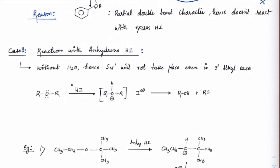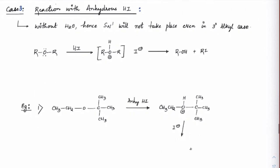With anhydrous HI, there is no water at all. Even a tertiary alkyl halide becomes difficult to form because there is no stabilizing factor — the solvent's dipole-dipole interaction is what helps carbocations form. With no water, the ability to form a tertiary alkyl carbocation is very low. So always think in terms of SN2 for anhydrous HI and proceed accordingly.